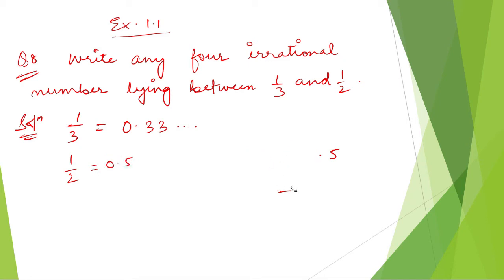Now look here, we are going to find any four irrational numbers between 0.33 and 0.5. So, irrational numbers can be any numbers which don't end.